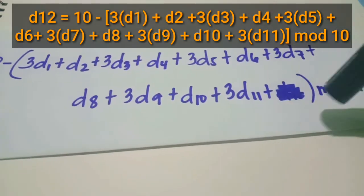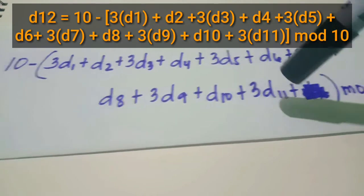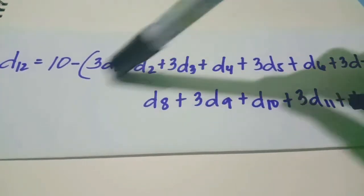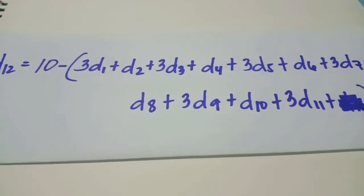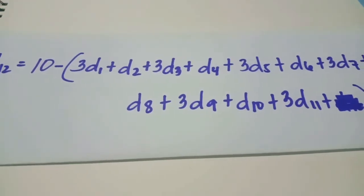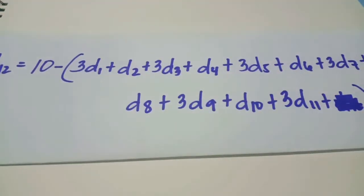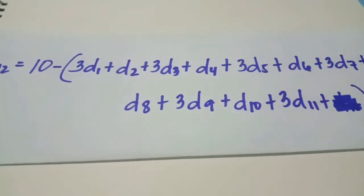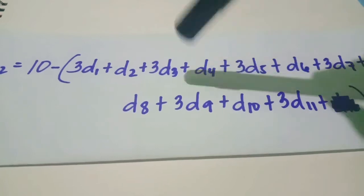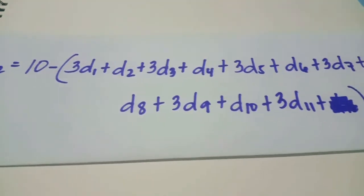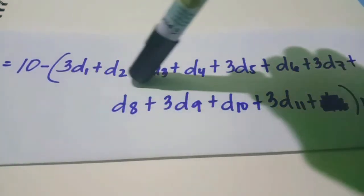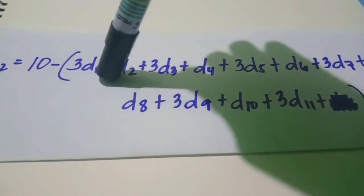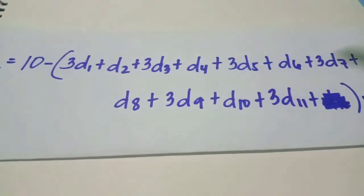Unlike ISBN, this goes up to D sub 12. Another difference, if you notice, in ISBN when the position is even, we multiply by 2. But in UPC, what we do is all numbers in odd positions we multiply by 3.